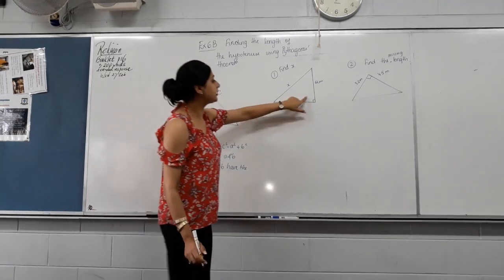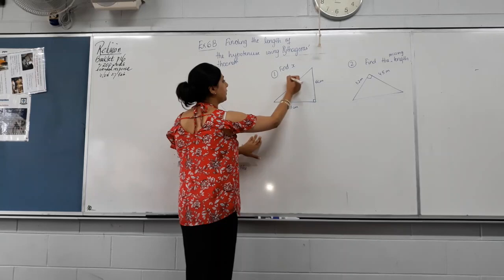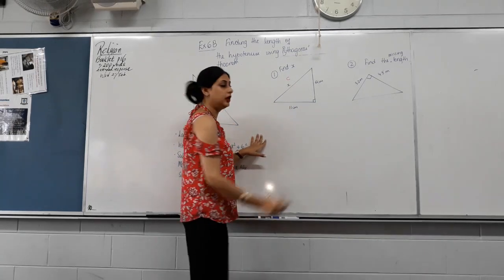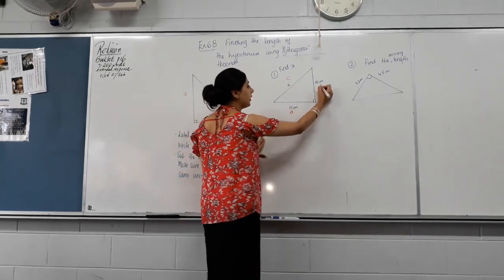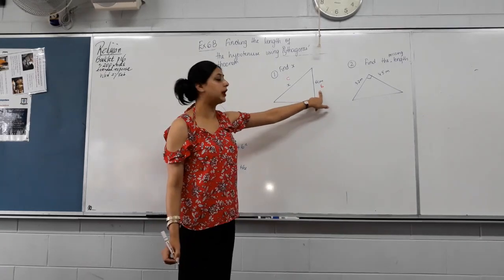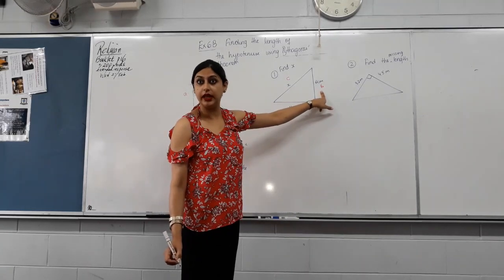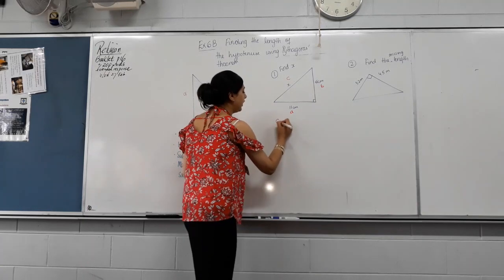All right, let's now follow these steps and find the missing length in this triangle. Label the triangle. This is the 90 degree angle, so this must be the hypotenuse. A and B, doesn't matter. Check. A and B. Do they have the same units? Yes. Let's move on. Writing the formula.